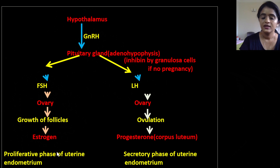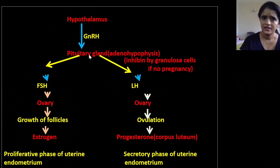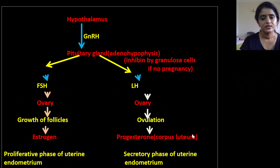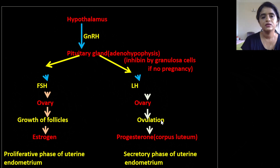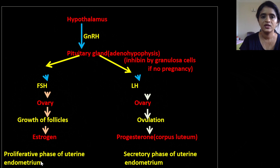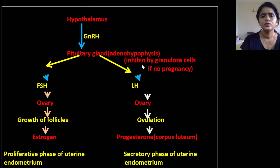LH, also secreted by the adenohypophysis, acts on the Graafian follicle after ovulation, converting it into corpus luteum, which secretes progesterone in addition to estrogen. This results in the secretory phase of the uterine endometrium. The LH-driven phase of the ovary is known as the luteal phase. So the ovary has a follicular phase controlled by FSH and a luteal phase controlled by LH. The follicular phase correlates with the proliferative phase, and the luteal phase correlates with the secretory phase of the uterine endometrium.